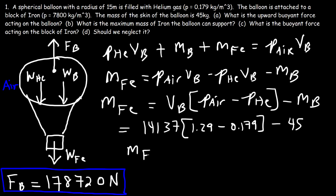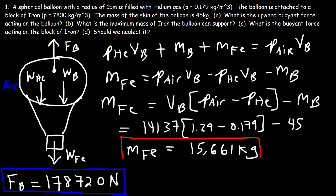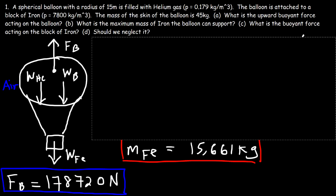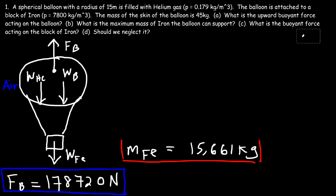So the mass of the iron load the balloon can support is 15,661 kilograms — that's the answer to Part B. Now for Part C: what is the buoyant force acting on the block of iron? And Part D: should we neglect it? We already have the formula: density of the surrounding fluid (air) times the volume of the submerged object times gravitational acceleration.